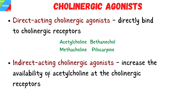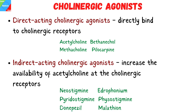The second type is indirect-acting cholinergic agonists, which increase the availability of acetylcholine at the cholinergic receptors by inhibiting the hydrolysis of acetylcholine by the enzyme acetylcholinesterase. Examples include neostigmine, edrophonium, pyridostigmine, physostigmine, donepezil, and malathion, among others.